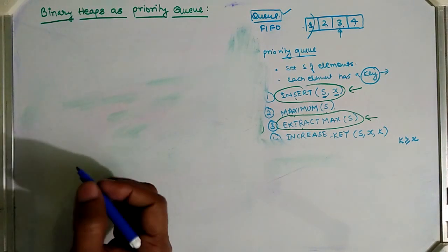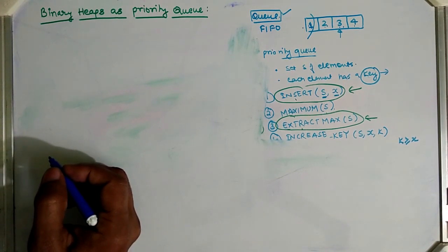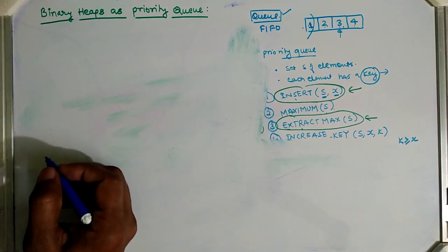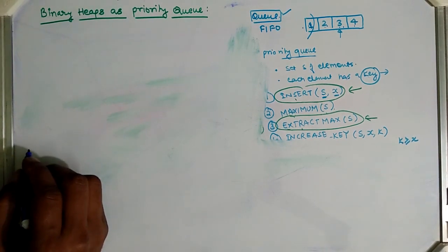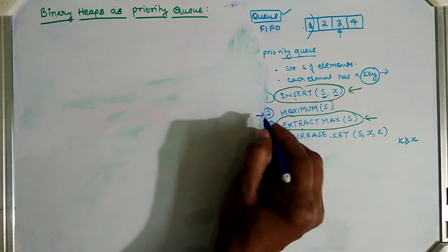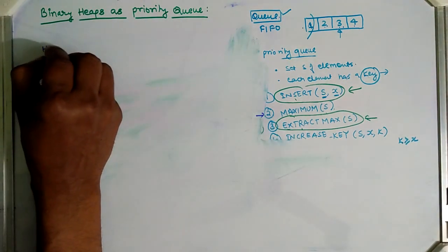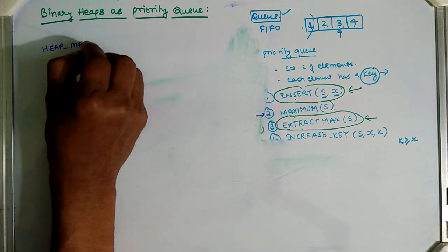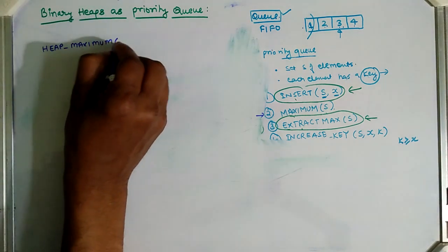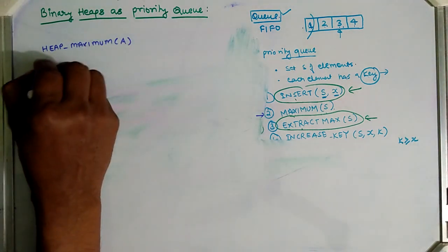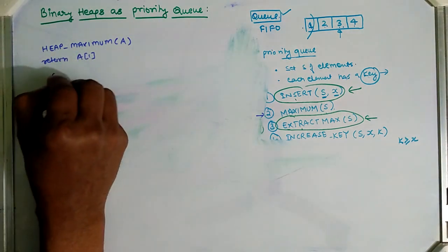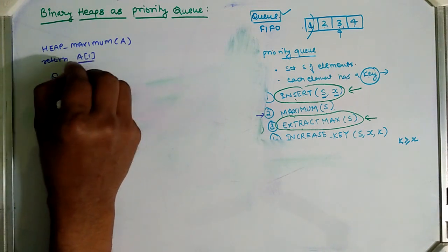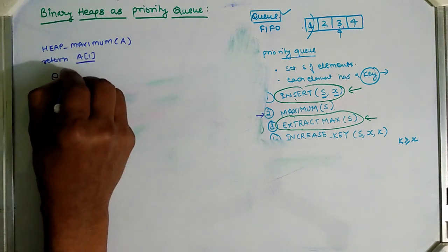Let's now discuss each operation in detail. The first is the Heap Maximum procedure. We pass the array and it returns the first index element, because in a max heap the maximum element is always at the first location. This operation takes Θ(1) time.